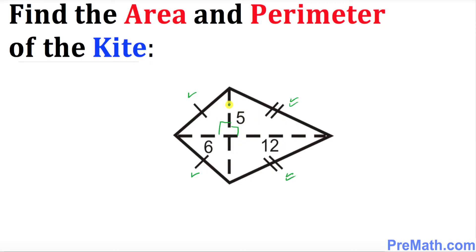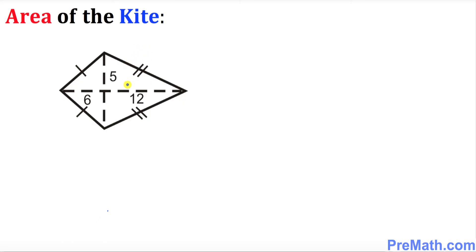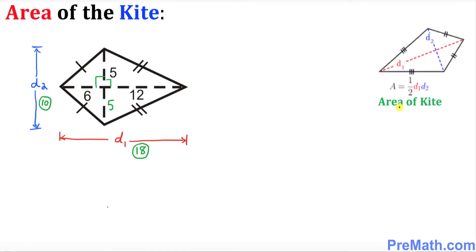If this side is 5, then this side is going to be 5 as well. Now we are going to find the area of this given kite using this formula. The formula for the area of a kite is: A equals one-half times d1 times d2, where d1 is the longest diagonal and d2 is the shorter one.